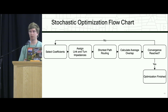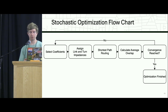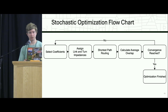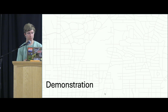Here's a quick flowchart of what this process looks like. You start by selecting your coefficients for your impedance functions, assign these to your network, and do the shortest path routing to get your modeled trips. Then you calculate the average overlap across all trips and determine whether or not you've reached convergence. If not, you repeat the steps until you have, and once you have, the optimization is finished.